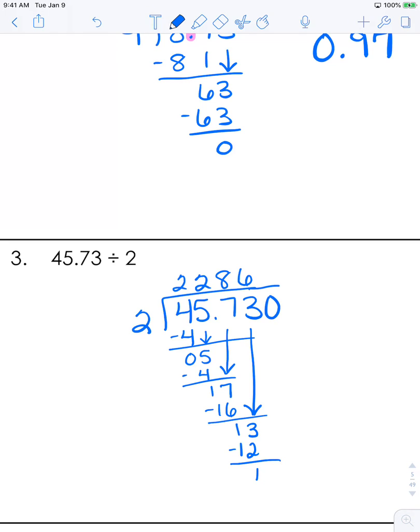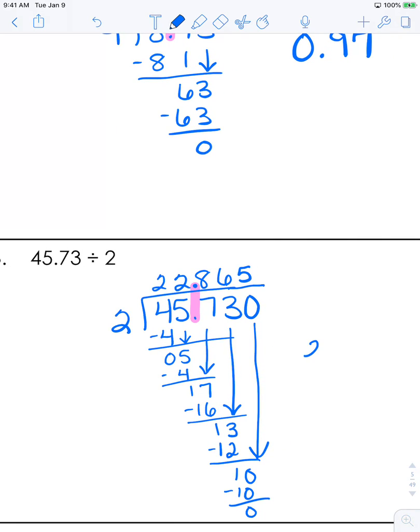But again, we can add that zero. We can extend this line. We'll bring the zero all the way down, and now we have 10. 2 goes into 10 five times nice and evenly. So that's going to be it for us. Let's find this decimal in the middle of all this and bring it straight up. Your quotient is 22.865.